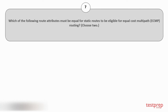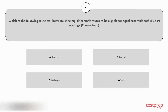Question number 7. Which of the following route attributes must be equal for static routes to be eligible for equal cost multipath routing? Choose two. Your options are: A) Priority; B) Metric; C) Distance; D) Cost.